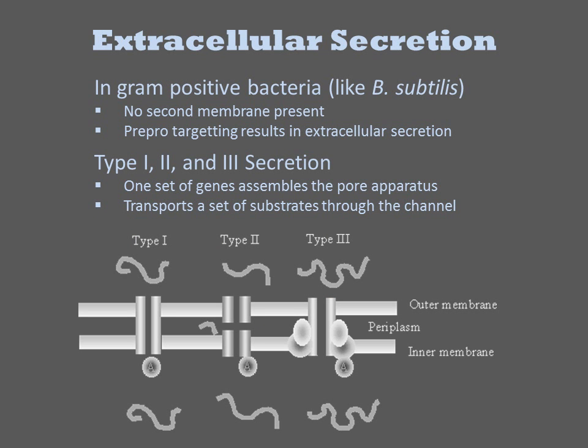Targeting a protein for secretion is very simple in a gram-positive organism like B. subtilis, since there is no second membrane. A gene encoding a protein targeted for periplasmic secretion in E. coli will encode a secreted protein in B. subtilis. However, there are other mechanisms by which a protein can be targeted for secretion in a gram-negative bacterium. We already saw autotransporters, but there are more elaborate routes as well — Type 1, 2, and 3 secretion are the most common routes, and each requires additional proteins that form channels between the membranes, allowing specific proteins to travel through.